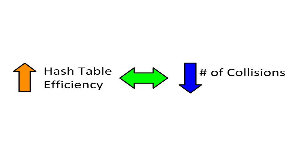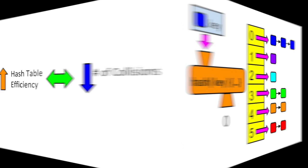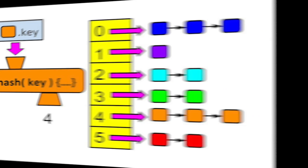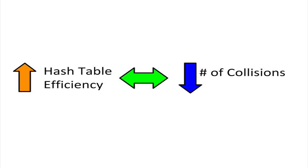To maximize the efficiency of storing and retrieving items in the hash table, we need to minimize the number of collisions. Each collision is another item in the bucket, another node in the linked list. We know that storing and retrieving items in a linked list grows more inefficient as the list grows longer. So it makes sense to keep these linked lists as short as possible.